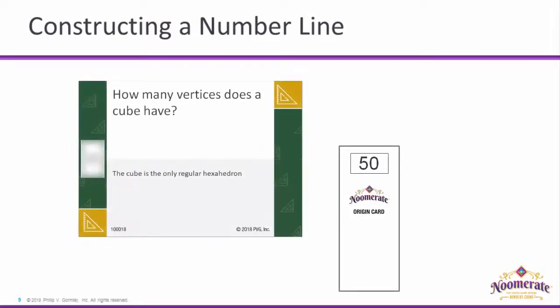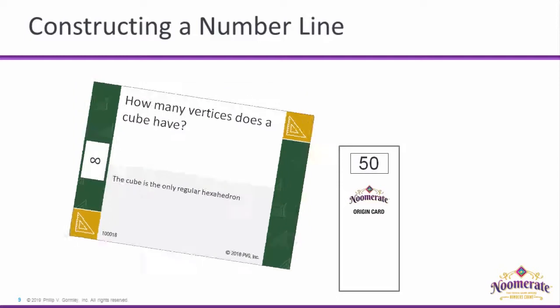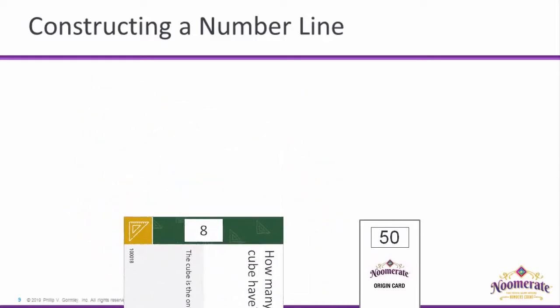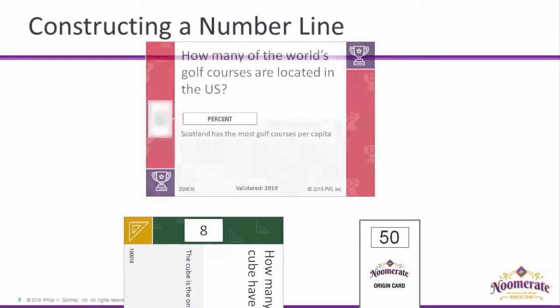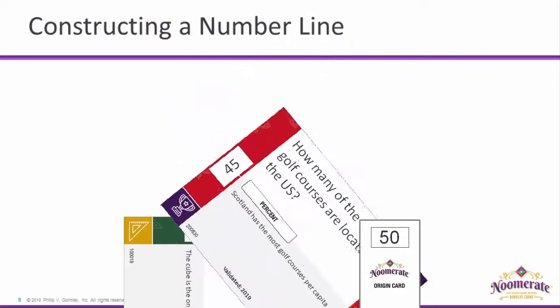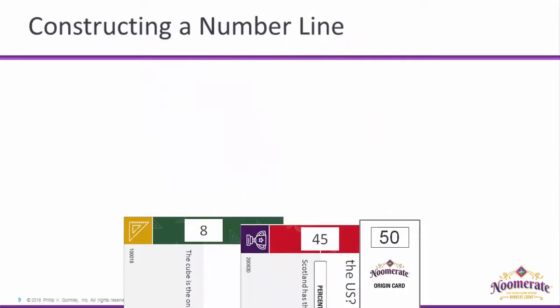The question is: how many vertices does a cube have? You don't need to know the exact answer; you just need to know where it fits on your number line. I'll guess there are fewer than 50 vertices on a cube, and since the answer is 8, that is correct, and I place the card to the left of the origin on the number line. On my next attempt, the question is how many of the world's golf courses are located in the U.S., and the answer is in percent. I'm going to guess between 8 and 50%, and since the true value is 45%, the answer is correct, and I place the card between the 8 and the 50 on my number line.